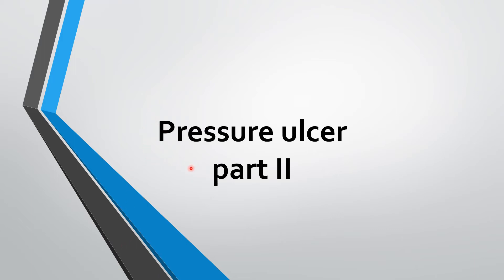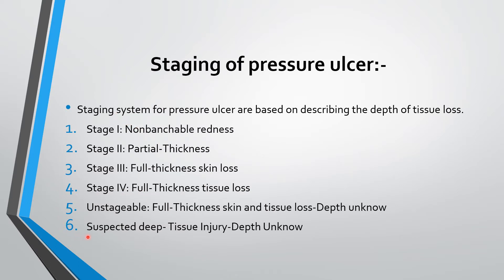Hello everyone. We continue with our topic on pressure ulcers — this is the second part. In this topic we deal with the stages of pressure ulcers. The staging system for pressure ulcers is based on describing the depth of tissue loss, so the staging system is based on the depth of tissue lost on that particular area. Stage one is non-blanchable redness, stage two partial thickness, stage three full thickness skin loss, stage four full thickness tissue loss, and stage five is unstageable where the full thickness skin and tissue are lost and depth is unknown. Suspected deep tissue injury is also a stage where depth is not known.